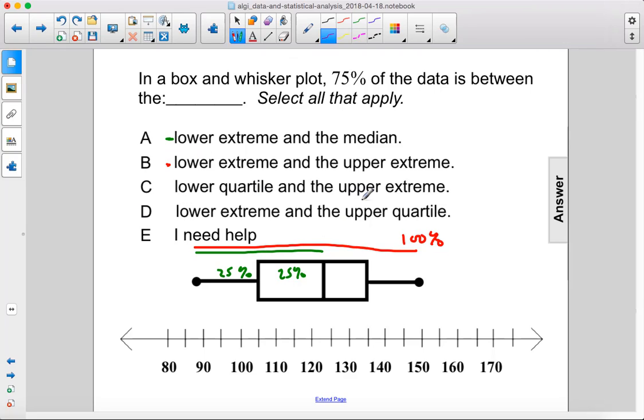C, we have the lower quartile and the upper extreme, so we have from here to here. We do know that that is right, because this is 25%, that's 25%, and this is 25%, therefore this is 75% of the data.